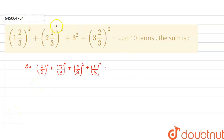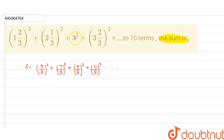Hello friends, here we have been given a series and we have to find the sum up to 10 terms. My series can also be written as: 5 divided by 3 squared, where 3 equals 3 times 1 plus 2, then 7 by 3 squared, then 9 by 3 squared, then 11 by 3 squared, and so on.